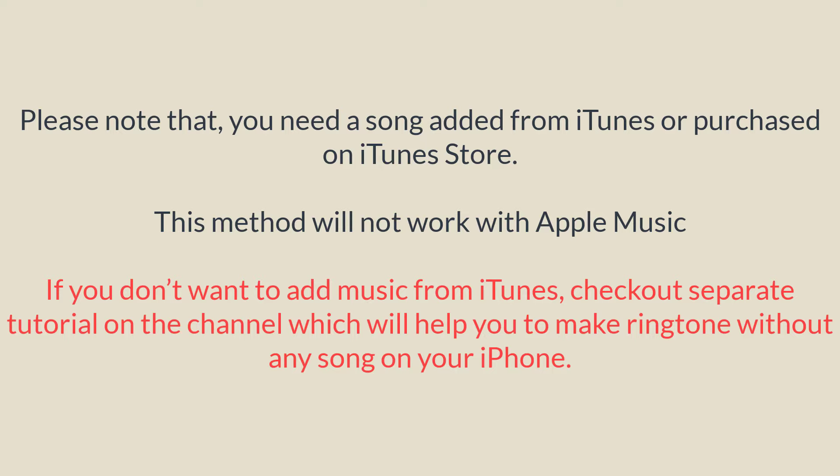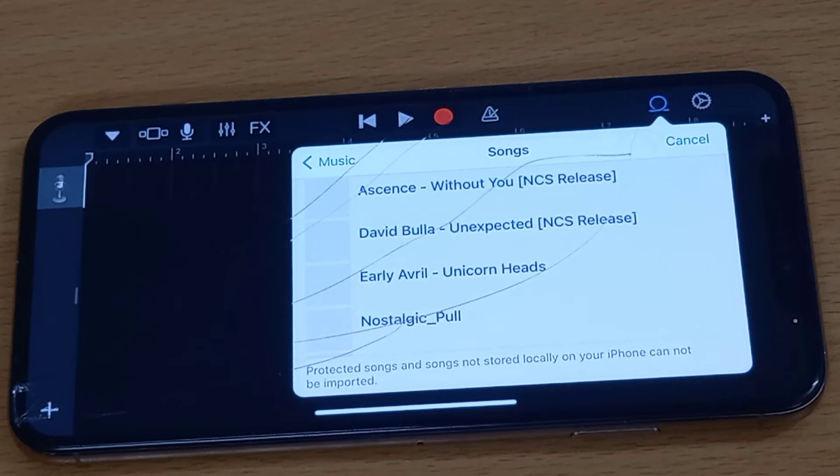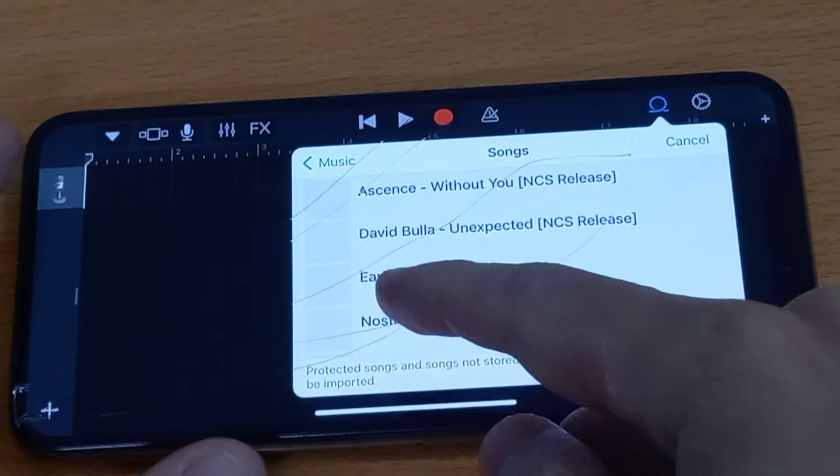Please note that you need a song added from iTunes or purchased on the iTunes Store. This method will not work with Apple Music. If you don't want to add music from iTunes, check out the separate tutorial on the channel which will help you make a ringtone without any song on your iPhone. For now, let's select a song and make a ringtone.